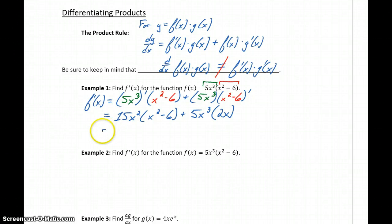The next thing we can do is distribute through. So this will become 15x to the fourth minus 90x squared plus 10x to the fourth. And then combining like terms, we can simplify this to 25x to the fourth minus 90x squared.